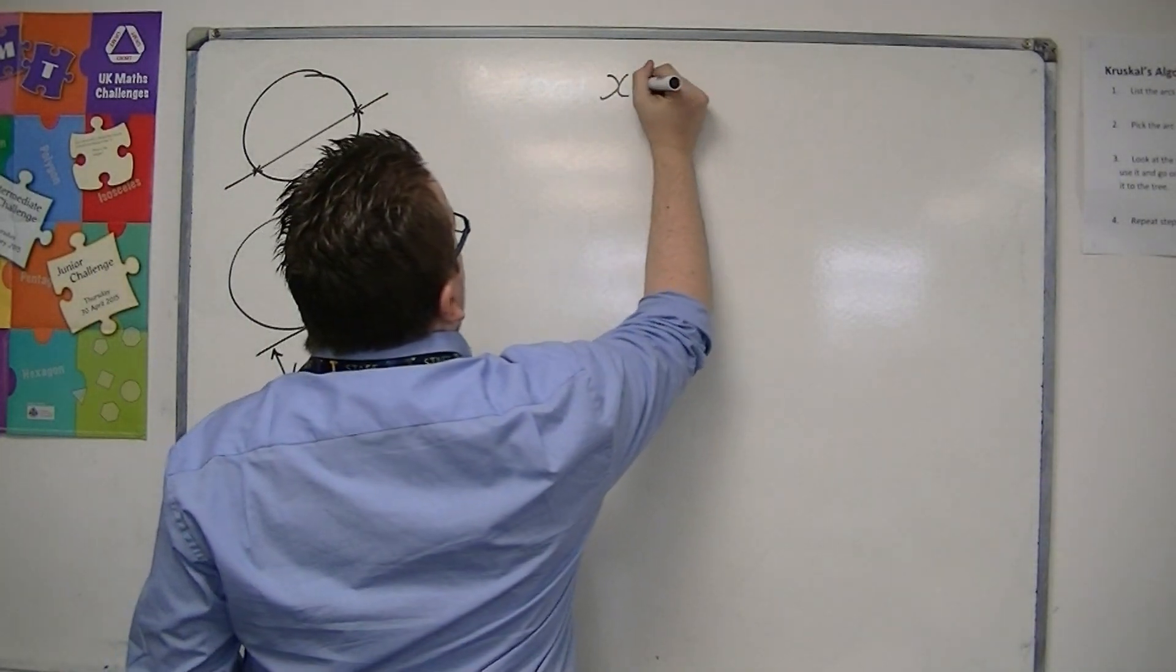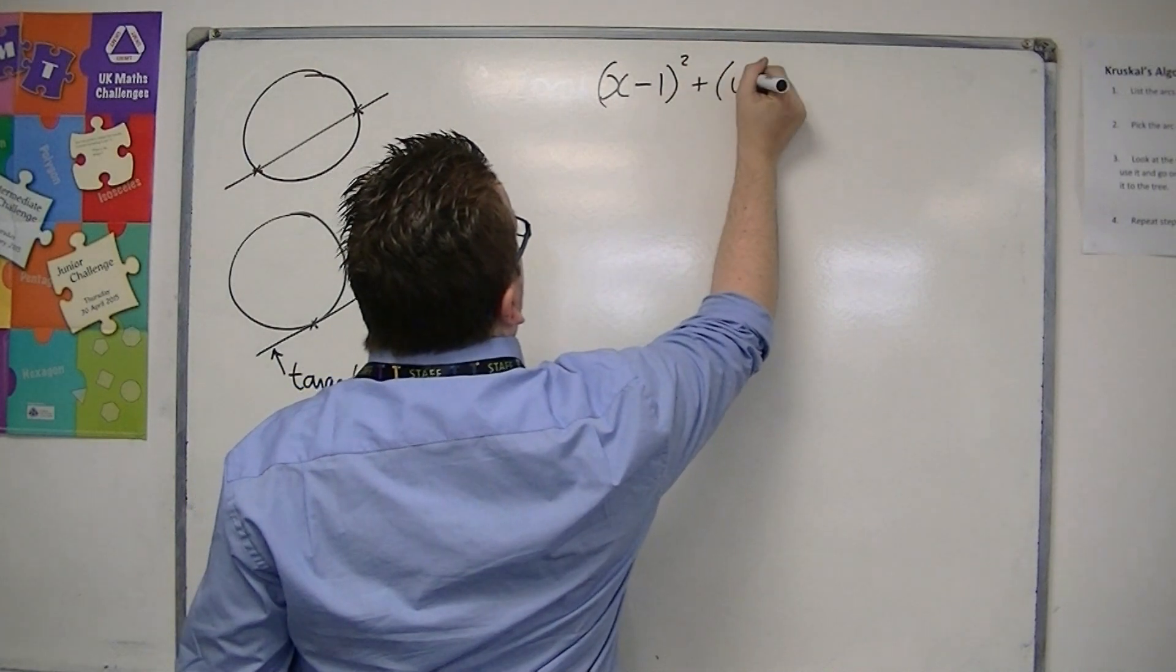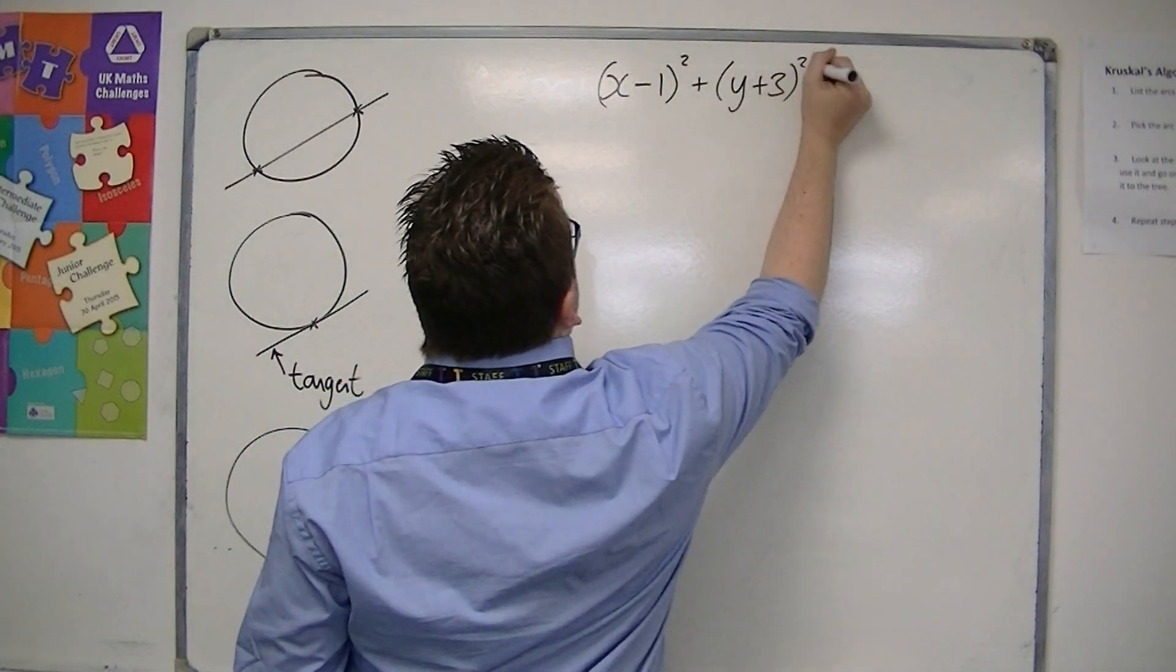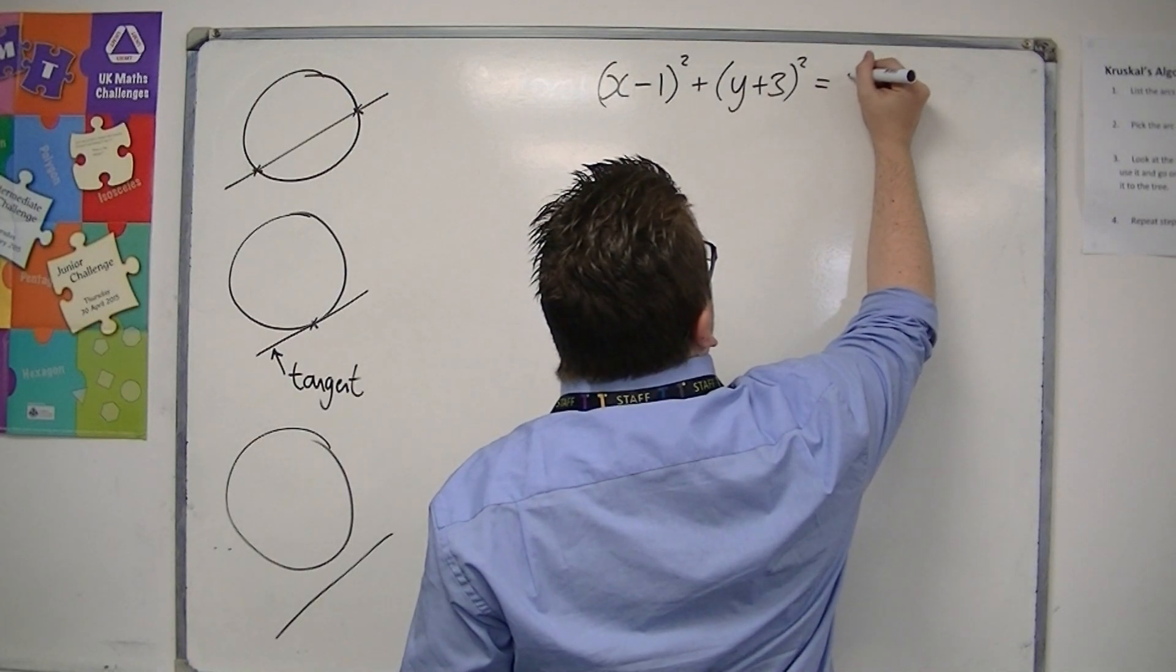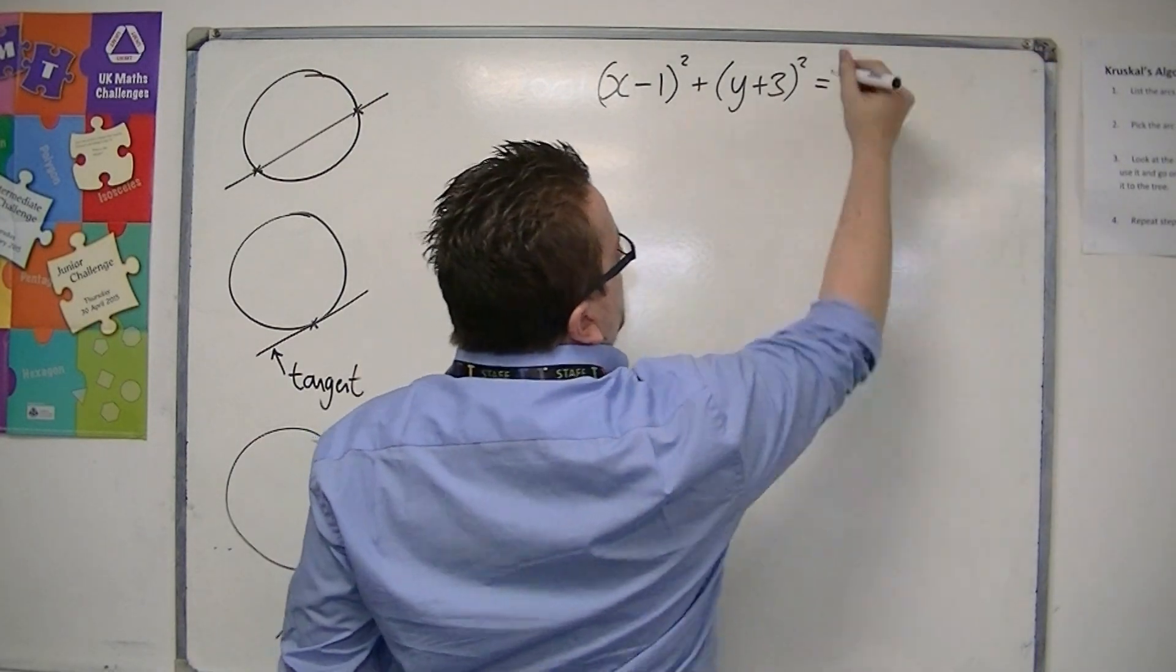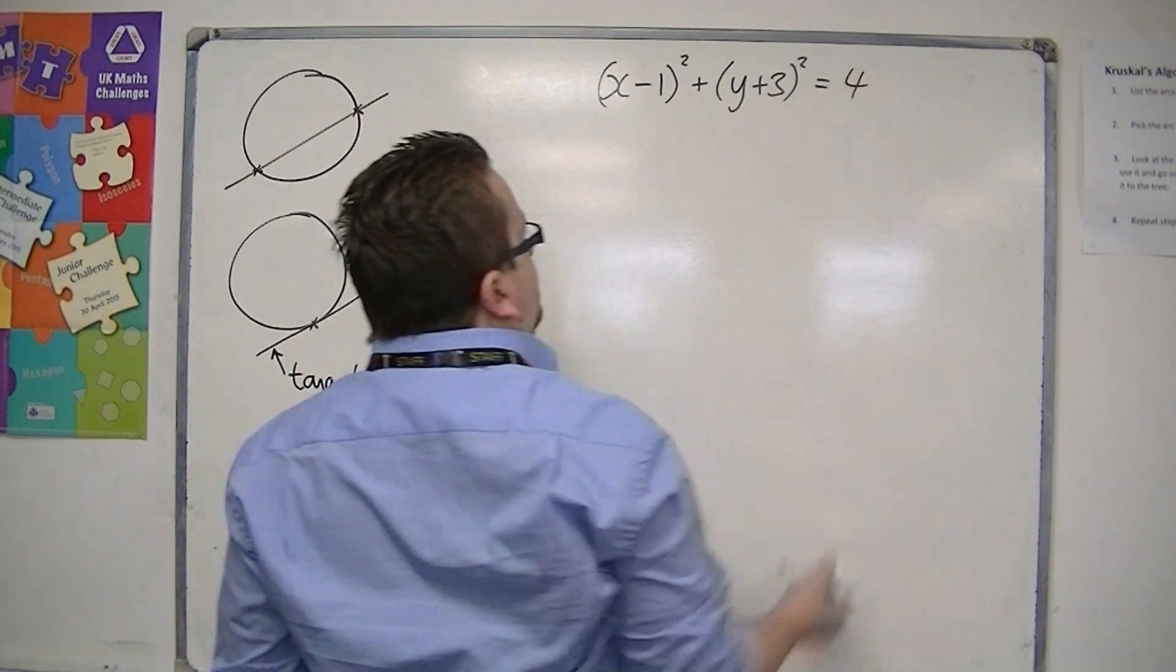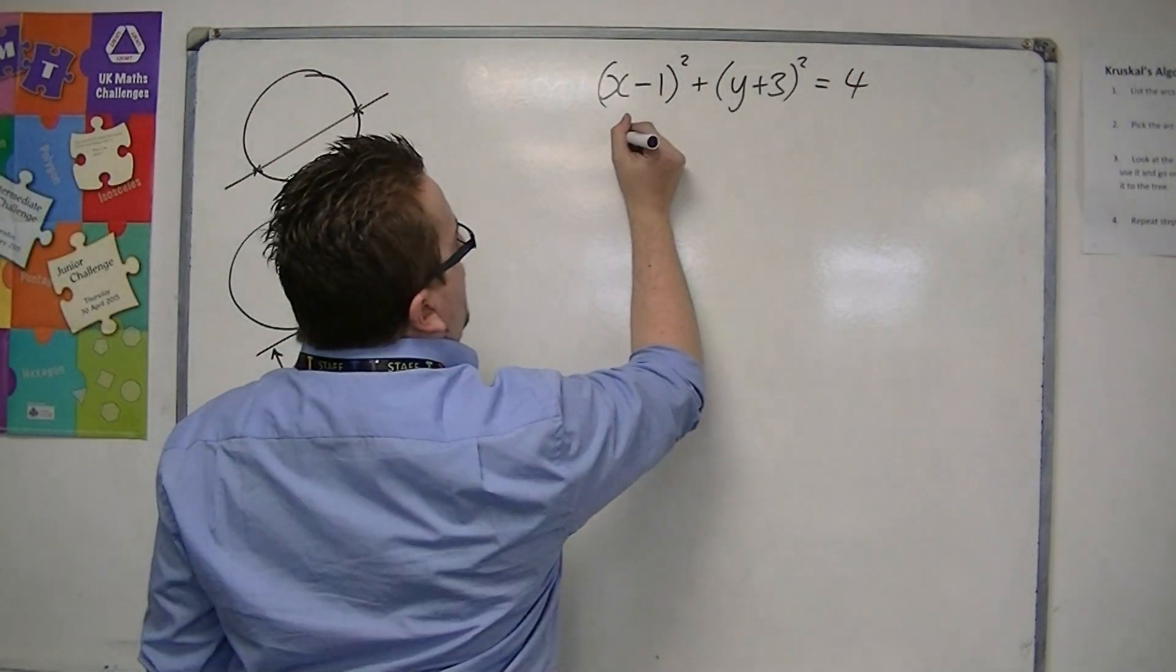So let's say we've got the circle x minus one squared plus y plus three squared is equal to, let's choose a nice number, four. And then we have a straight line,